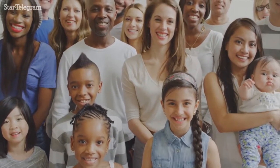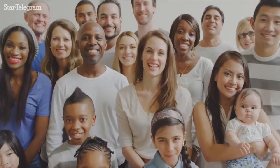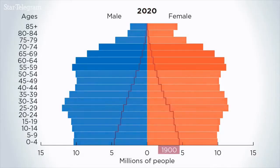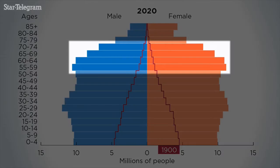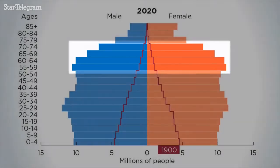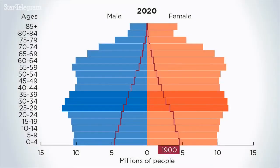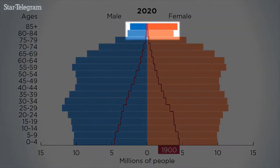By 2020, the first decade of population projections, the pyramid has changed shape. We can see the baby boomers, now as older adults, and the millennial generation, which will have aged into adulthood by 2020. We can also see that the pyramid is lopsided at the oldest ages, with women outliving men.